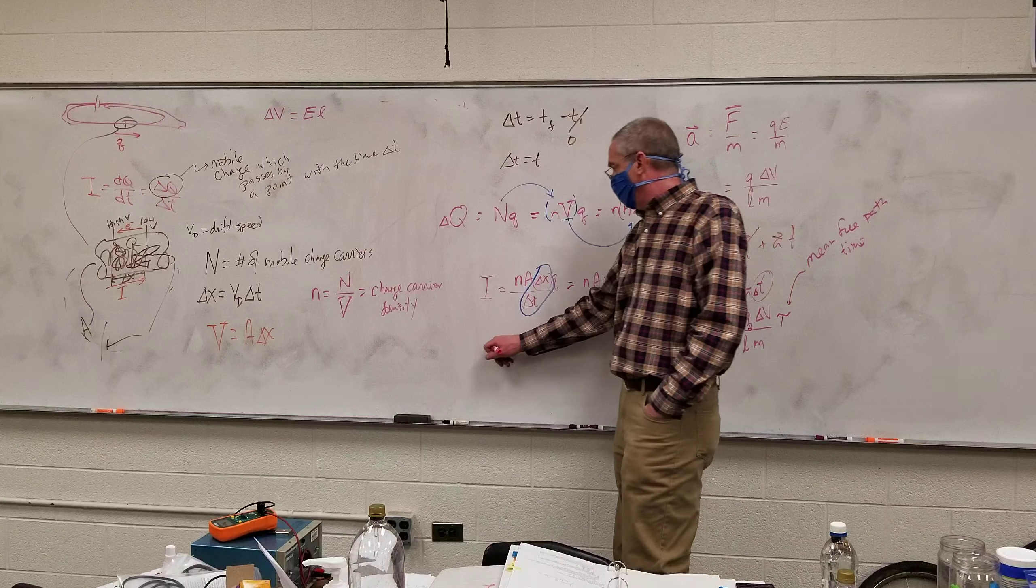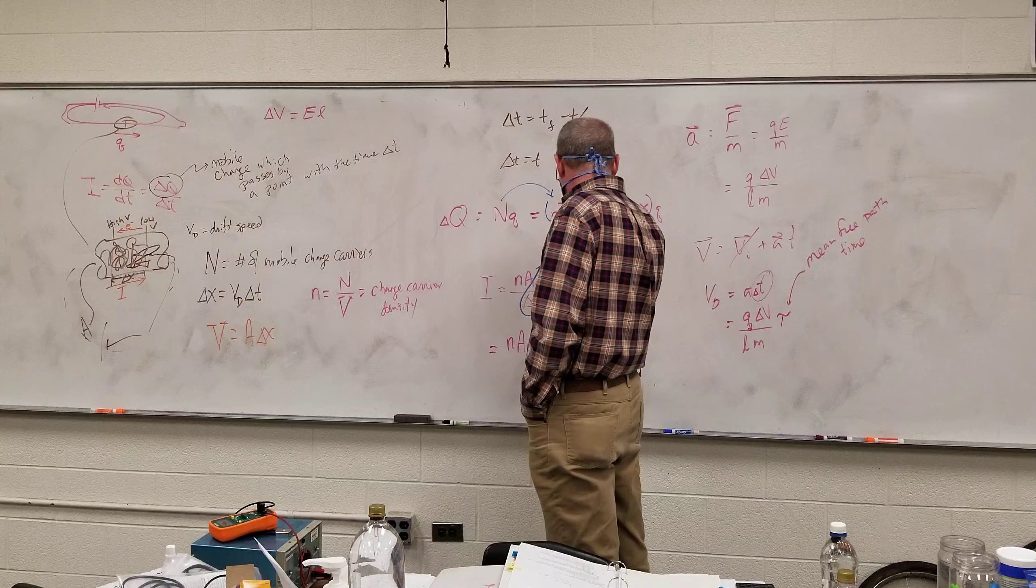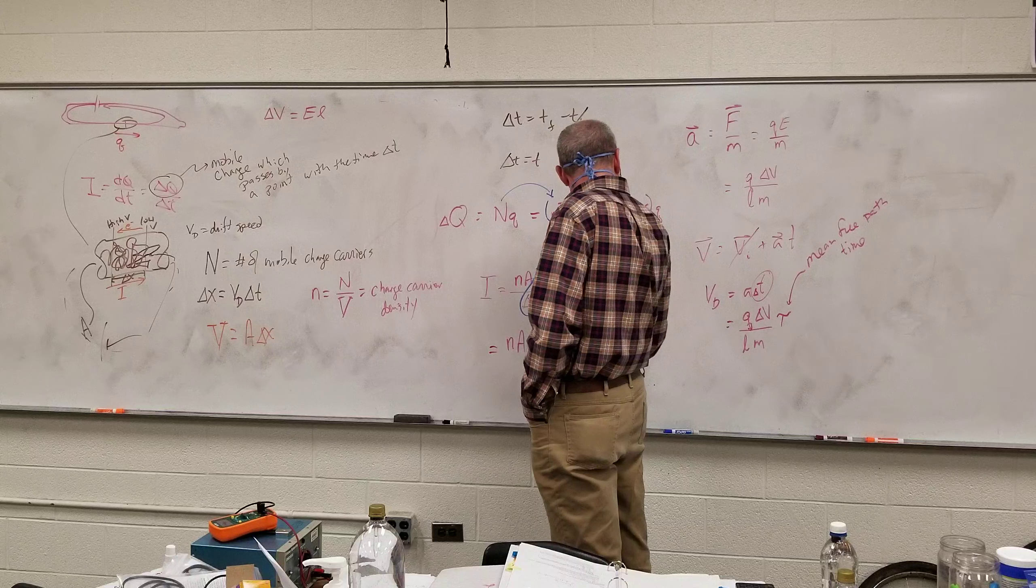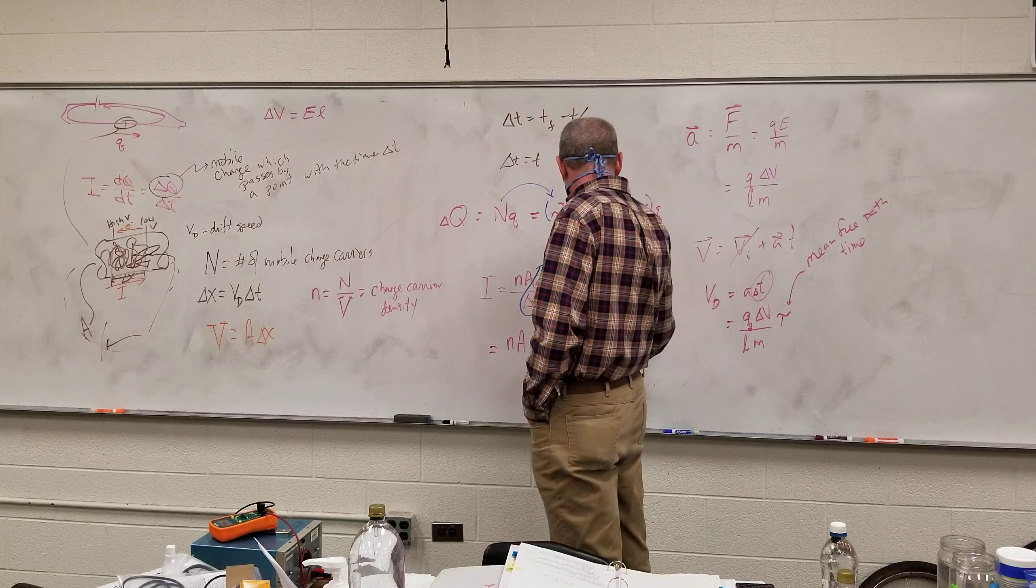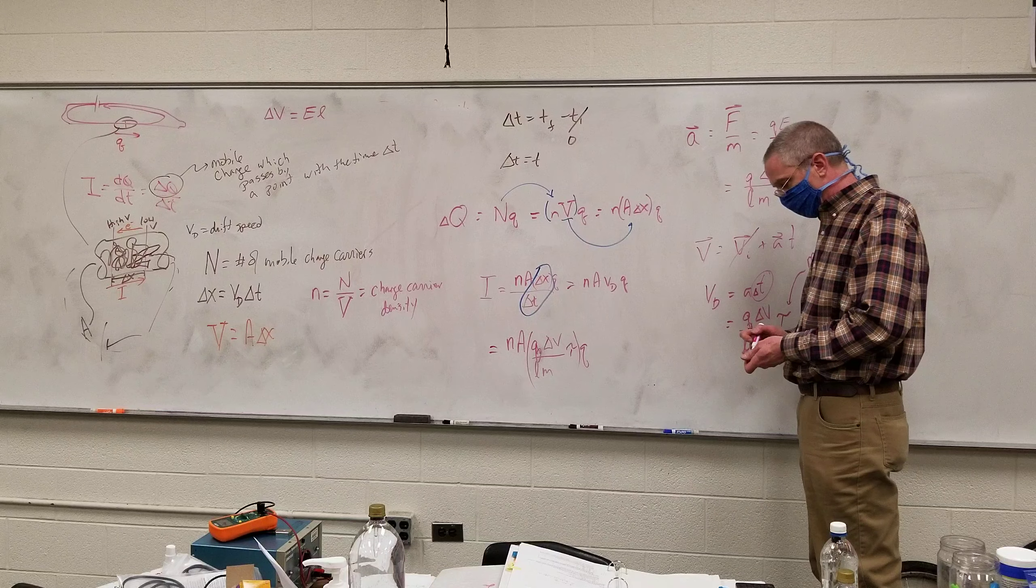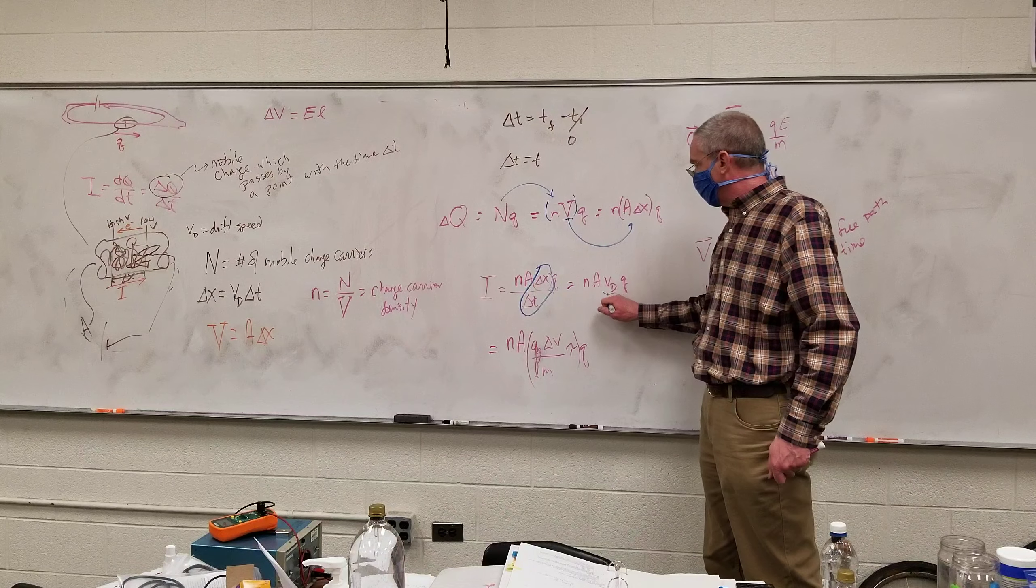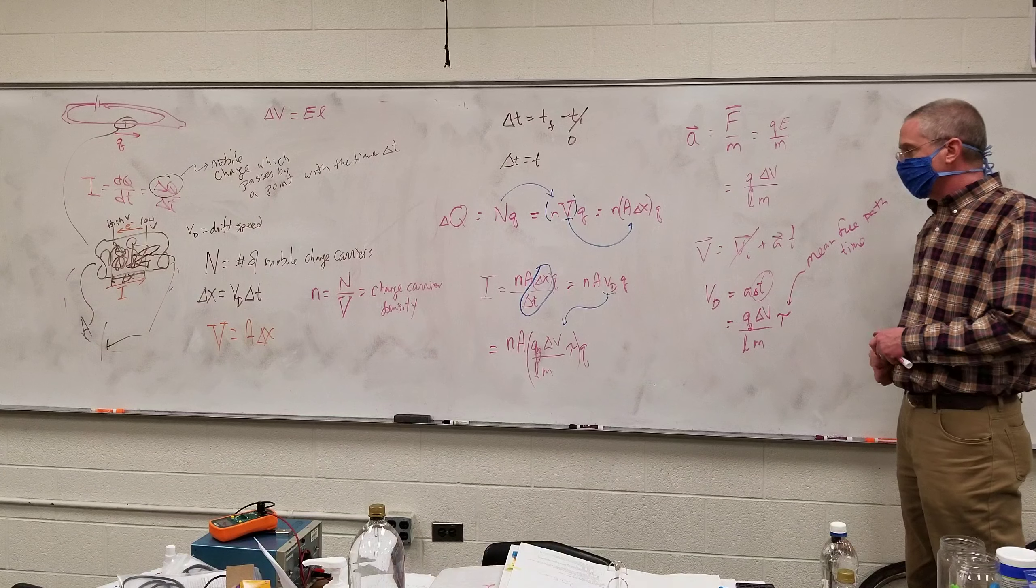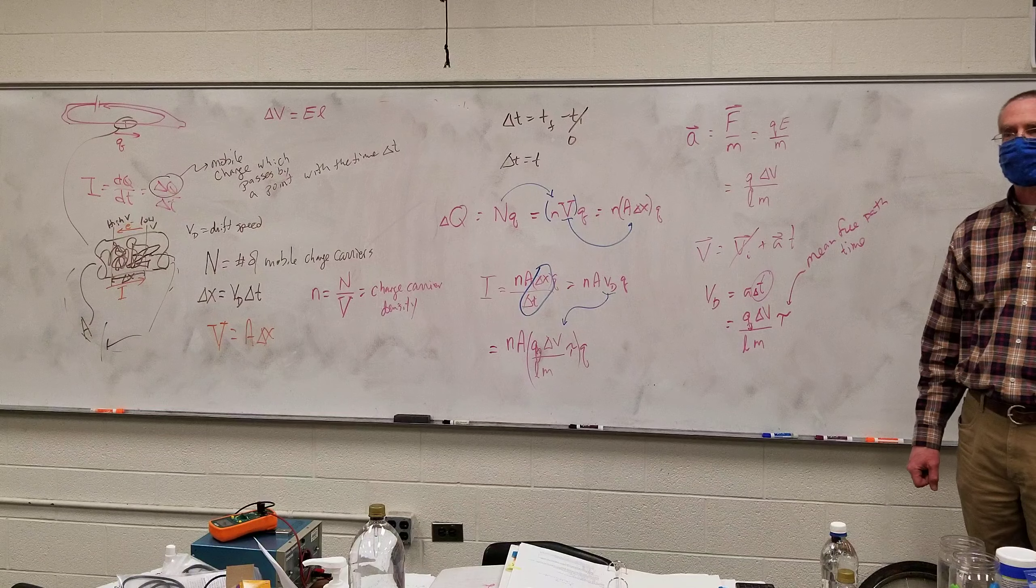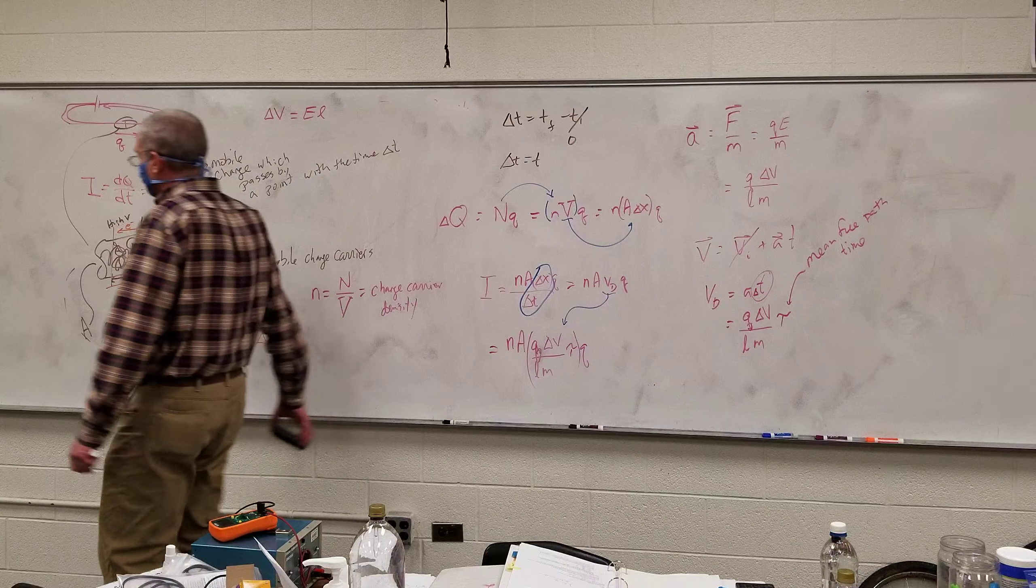So now plugging into here, we have n A Q delta V over LM tau times Q. So the substitution we just made is that my drift speed is what's in parentheses there. Isn't this so much simpler than what we started with? It is, we're almost there. We aren't getting someplace.